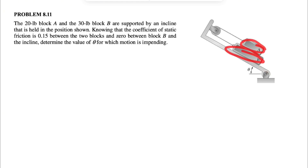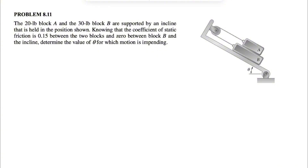So we have friction between block A and B, which is 0.15. We need to determine the value of theta in the figure for which motion is impending, meaning motion is about to happen. Block B is going to move down and block A is going to move to the left. We're going to use the free body diagram of each of them to find the angle theta where motion is about to happen.